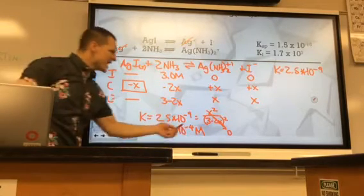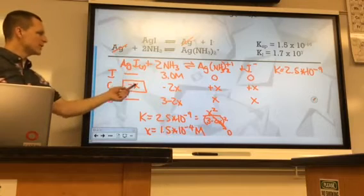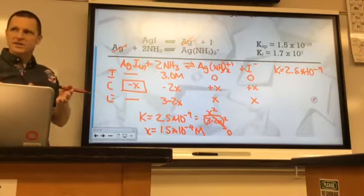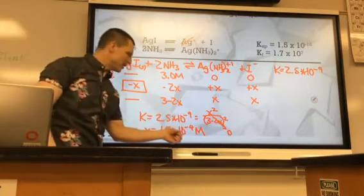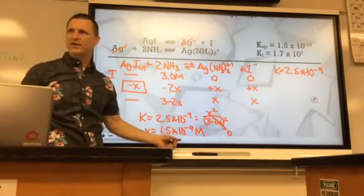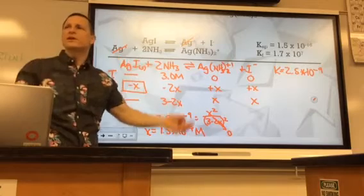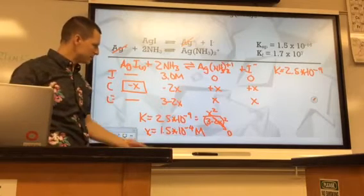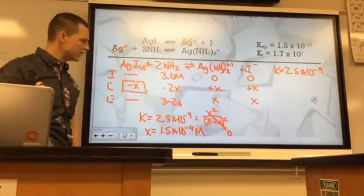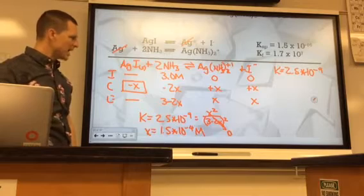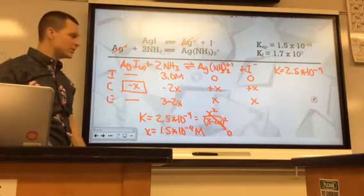So what did we just do? This X that we got is how soluble silver iodide is in the ammonia solution. Now, to me, when I look at this, this is not very impressive. I look at this and think, well, gosh, I thought that it was supposed to really increase the dissolving ability or the solubility by adding a complex ion ligand, but it doesn't that much.